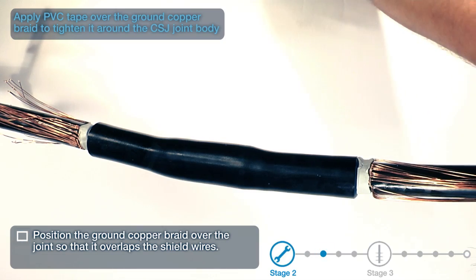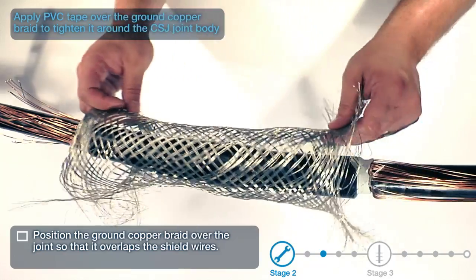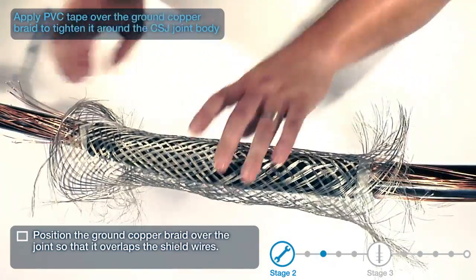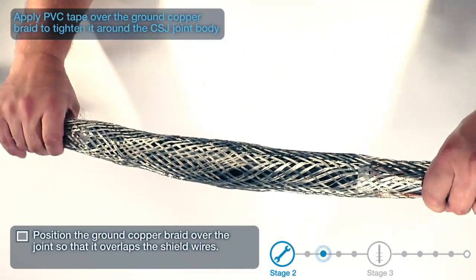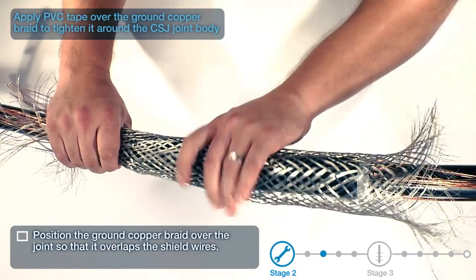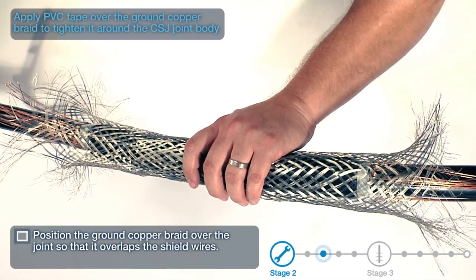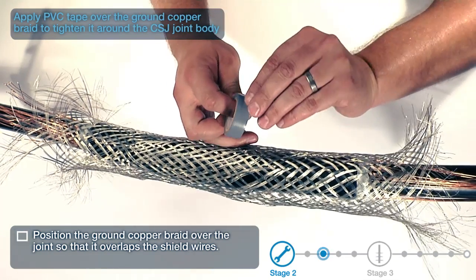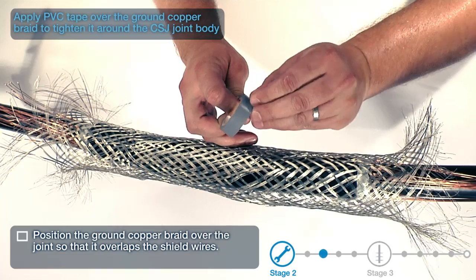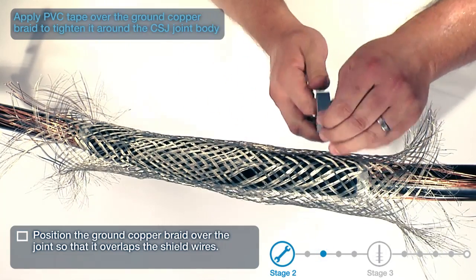Position the ground copper braid over the joint so that it overlaps the shield wires. Apply PVC tape over the ground copper braid to tighten it around the CSJ joint body.